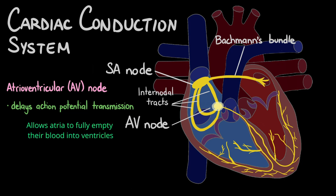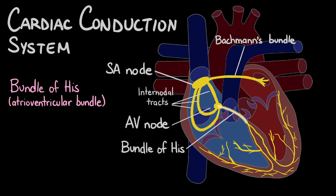This delay allows the atria to fully contract and empty their blood into the ventricles before the ventricles are stimulated to contract. From the AV node, the electrical impulses travel down a specialized bundle of cells called the bundle of HIS, also known as the atrioventricular bundle.